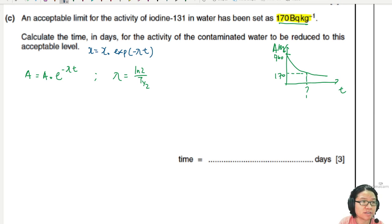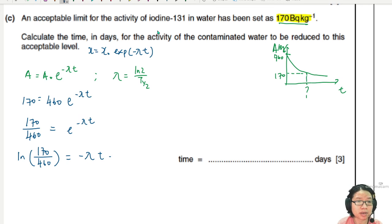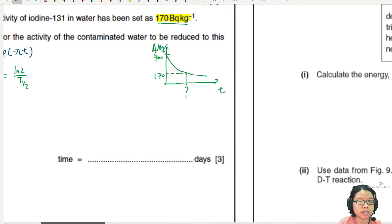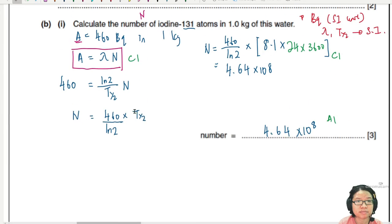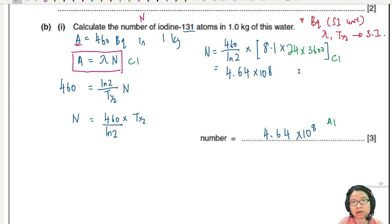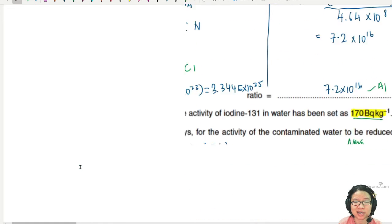We know the initial activity, A naught, is 460. The final activity we want, A, is 170. This equals e to the negative lambda t. I'll bring the 460 over and divide: 170 over 460 equals e to the negative lambda t. Take the natural log: ln of 170 over 460 equals negative lambda t. Do we have lambda? We didn't really calculate lambda in the previous part - this whole thing was about half-life. Now it's time to calculate lambda. You could have calculated lambda earlier, and if you did, that's okay. Just make sure you show your working clearly.